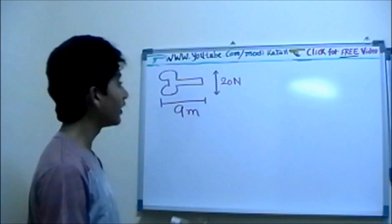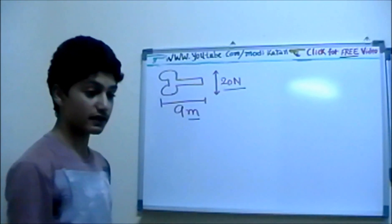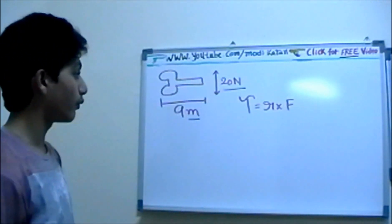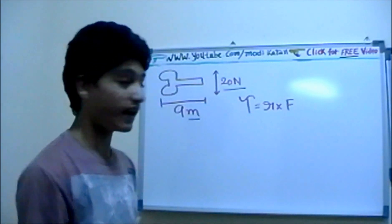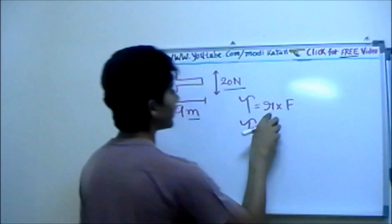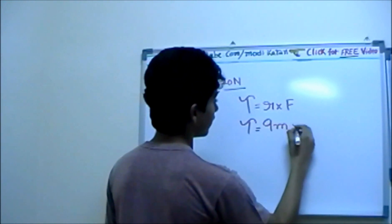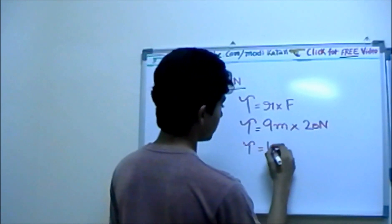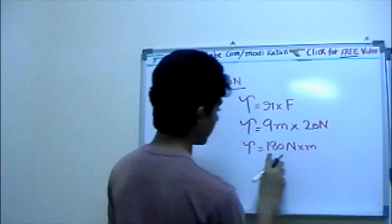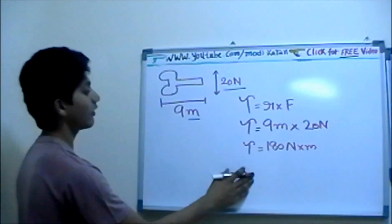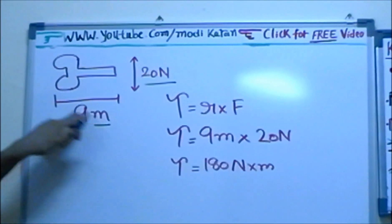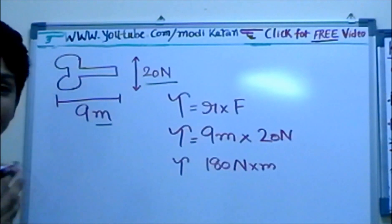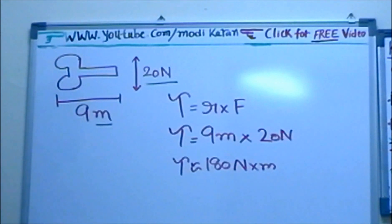It's easy — we check units. Force is in Newtons, distance is in meters, so we use the formula. Torque equals radius times force. Radius is 9 meters, force is 20 Newtons. Replacing the values: 9 times 20 gives 180 Newton meters. So torque equals 180 Newton meters — we just found the torque of the wrench. Since the problem says approximately 9 meters, we write torque is approximately 180 Newton meters.